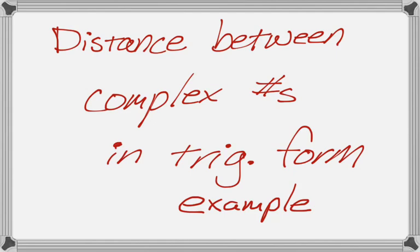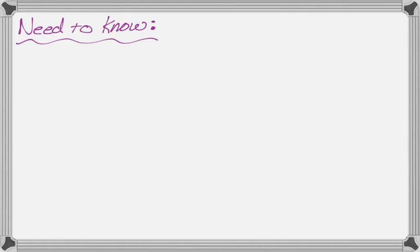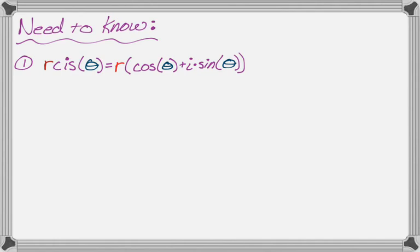There's a couple things that you need to know before you do this. The first one is that you need to know what r·cis(θ) stands for, because that's probably the way it's going to be given. So r·cis(θ) is an abbreviation of r times the quantity cosine θ plus i, the imaginary number, times sine of θ. And when you have this, you have to know what r and θ are, because those are really important for this particular problem.